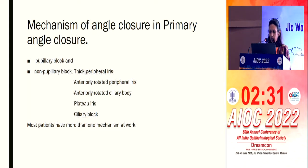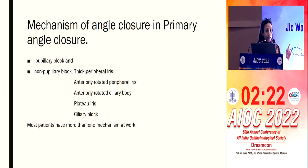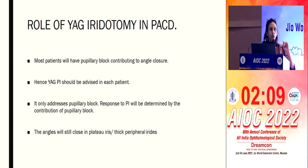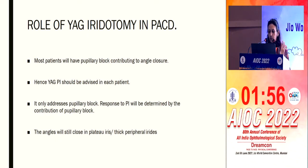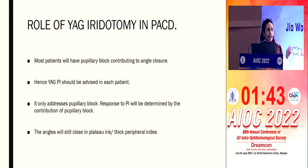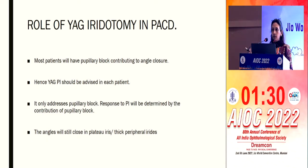However, there are non-pupillary block factors — thick peripheral iris, anteriorly rotated ciliary body, plateau iris configuration, and ciliary block. When you do an iridotomy, you relieve only the pupillary block. Studies show that in Chinese patients, 54.8% of primary angle closure was caused by multiple mechanisms. Always, the patient will not have just one mechanism, with pupillary block being the main one. Hence iridotomy should be advised for each patient, but it will address only the pupillary block, and response to PI will be determined by the contribution of the various factors.